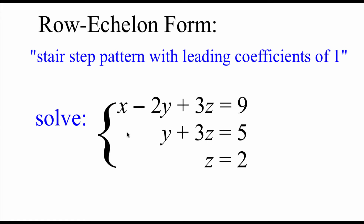So in the top equation, our x has a 1 on it. The middle equation, our y has a 1 on it. The last equation, our z has a 1 on it. And then what this allows us to do is go through and use something called back substitution to figure out our missing values.